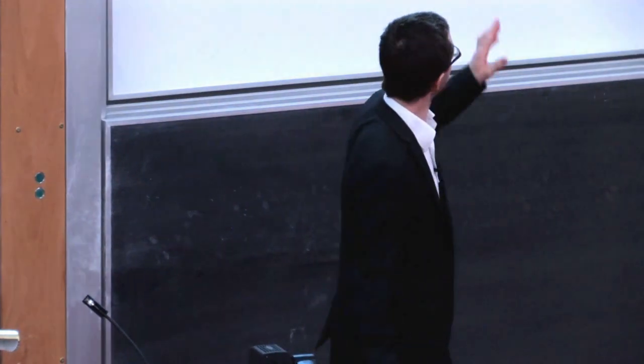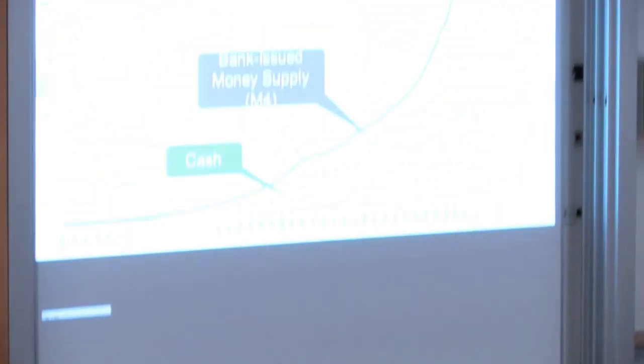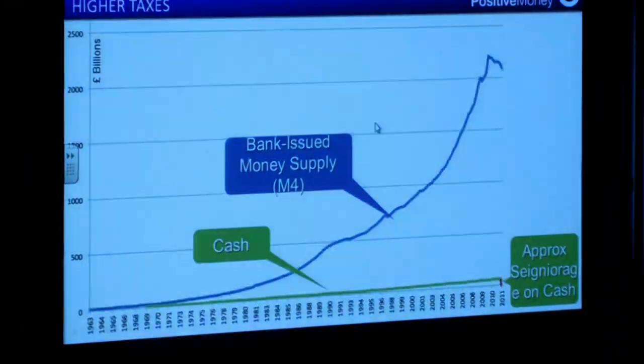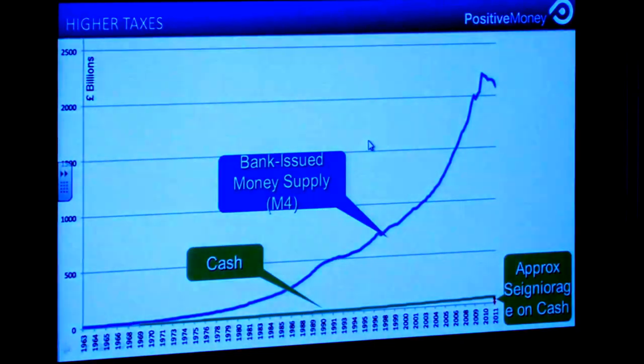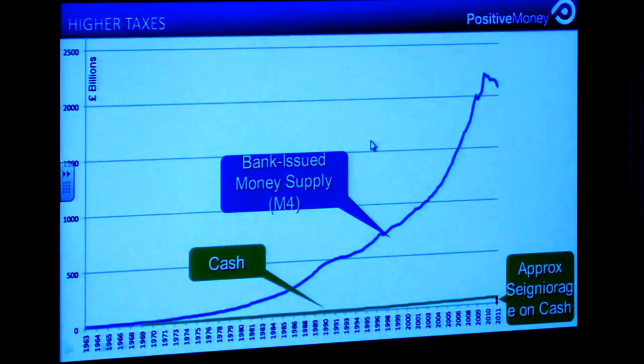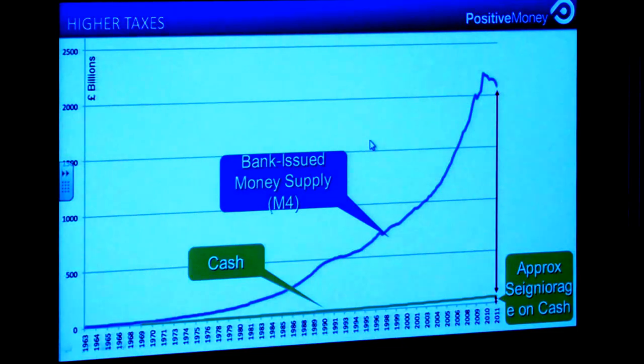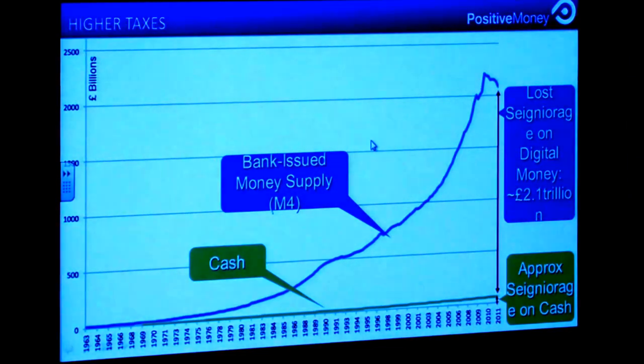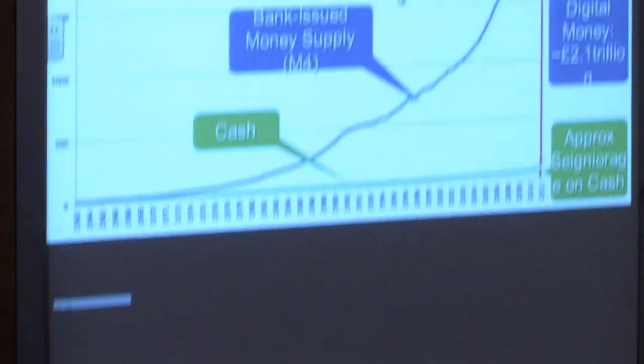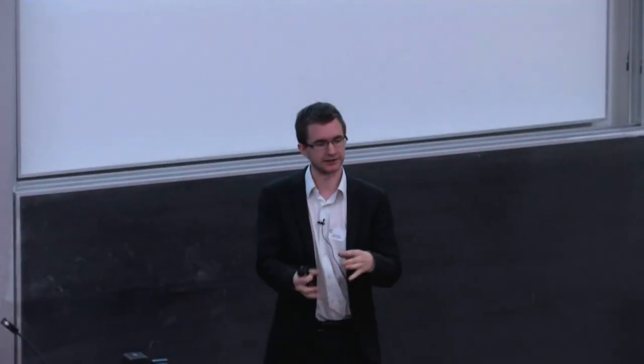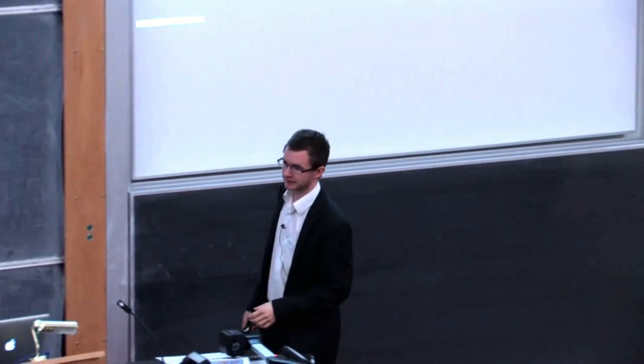But going back to this chart, which shows you the green line at the bottom is money created by the state. The blue line is money created by the banking sector. We've been getting the profit on this much here. The term for this profit is called seigniorage. And we've been getting that profit. And we've been missing out on this bit here. So this is approximately £2.1 trillion of taxes that people have had to pay. Which wouldn't have been necessary if banks had kept this ability to create electronic money as well. So £2.1 trillion, to put that into some kind of perspective, it's enough to pay off the national debt twice over.